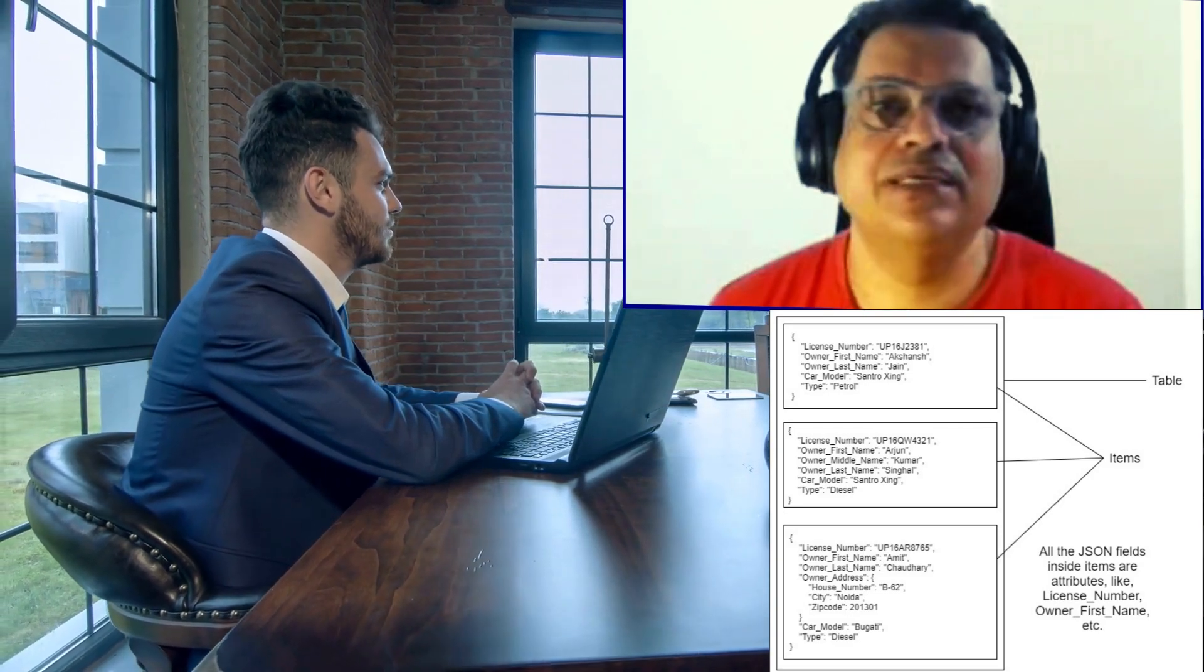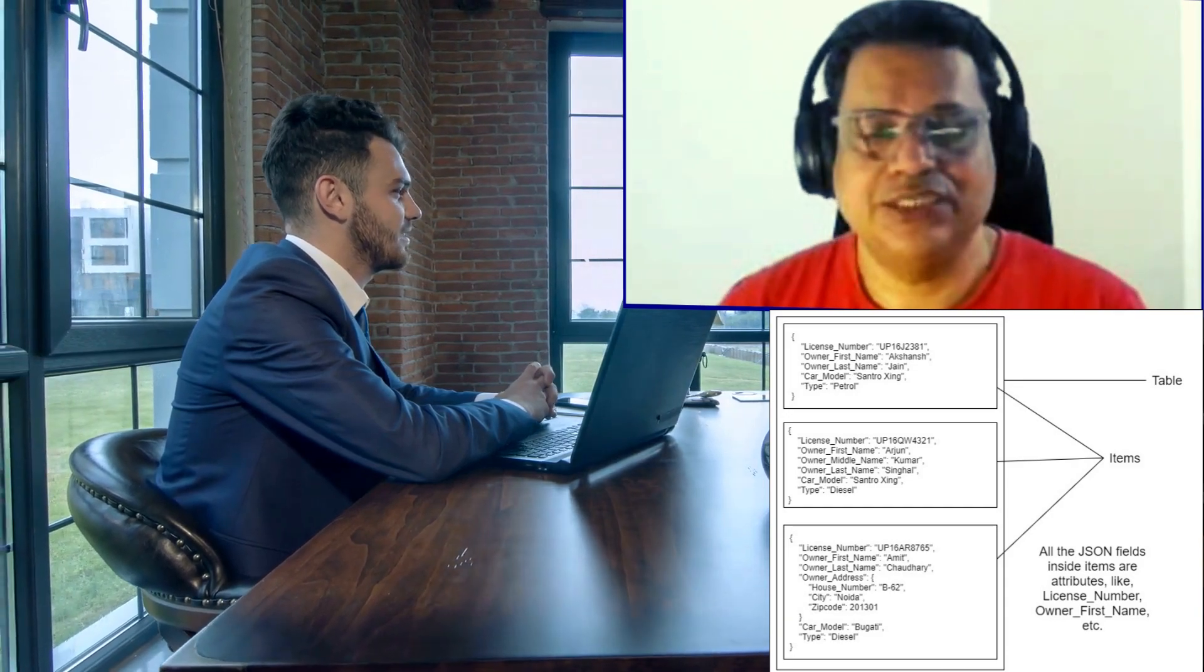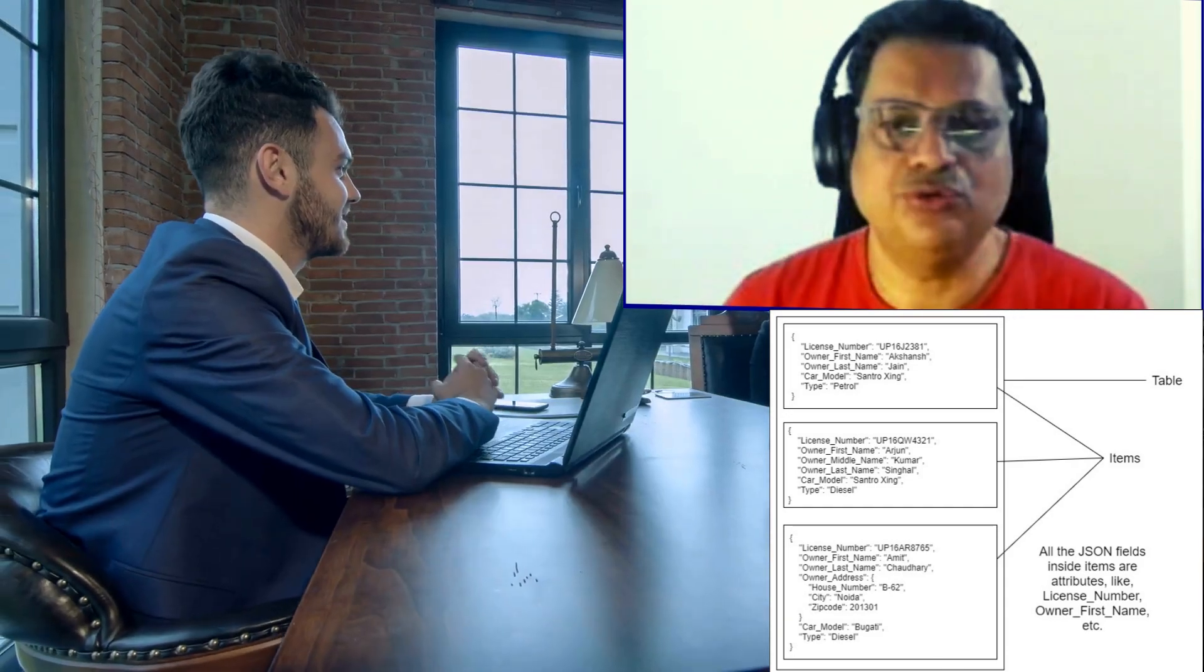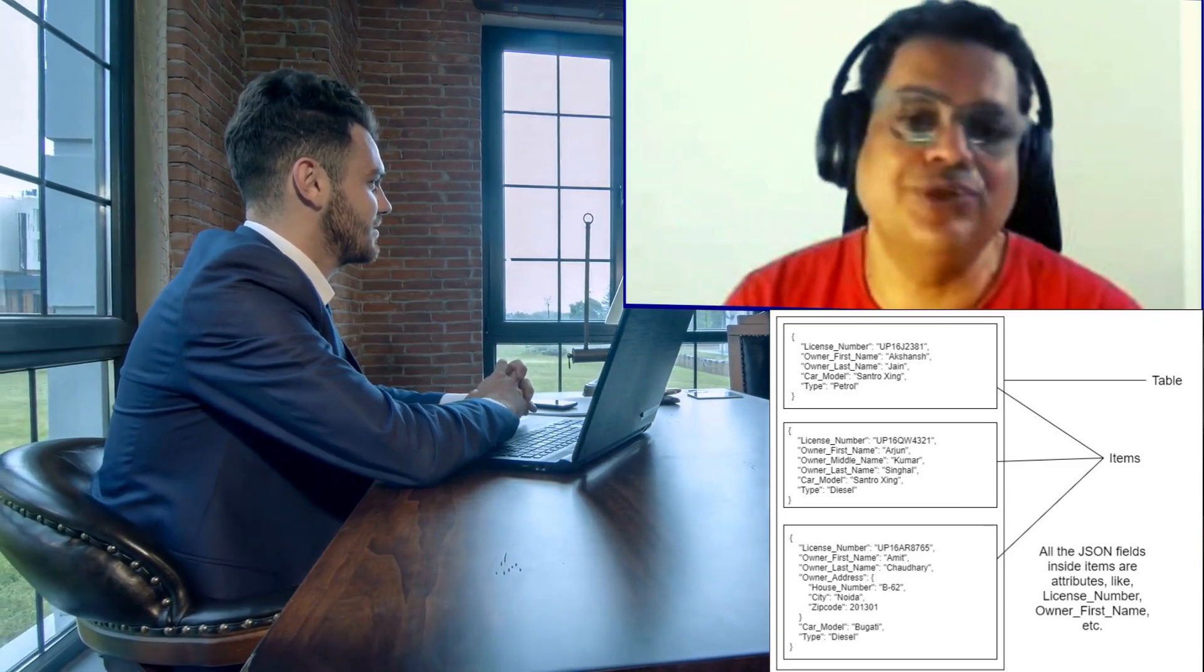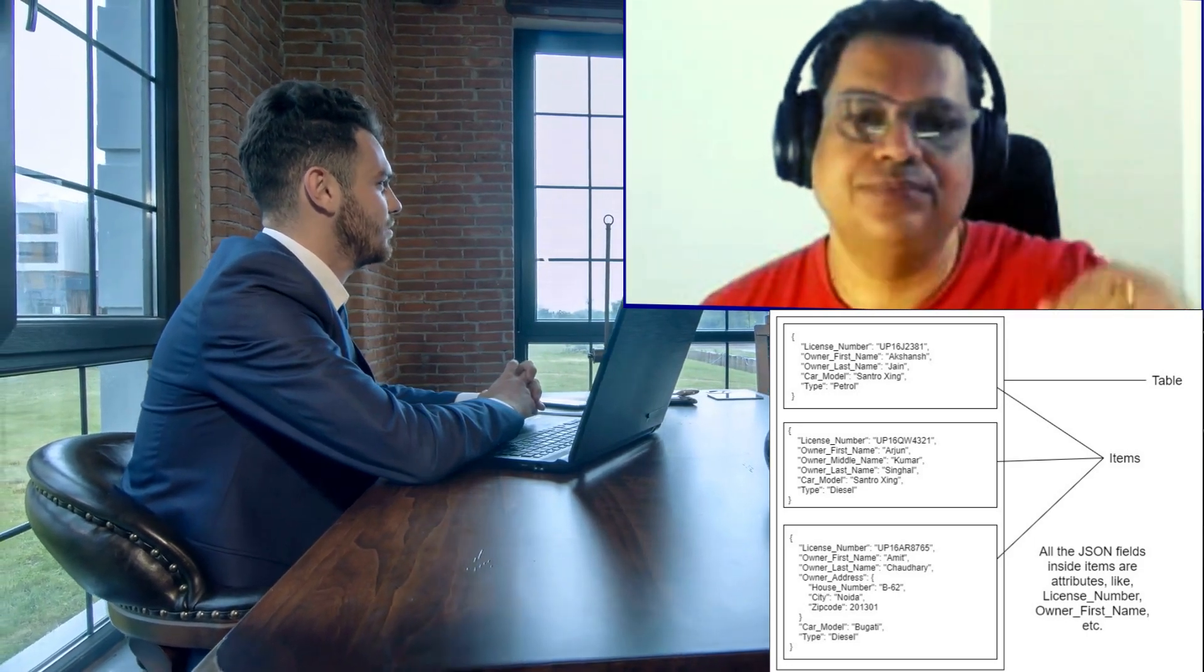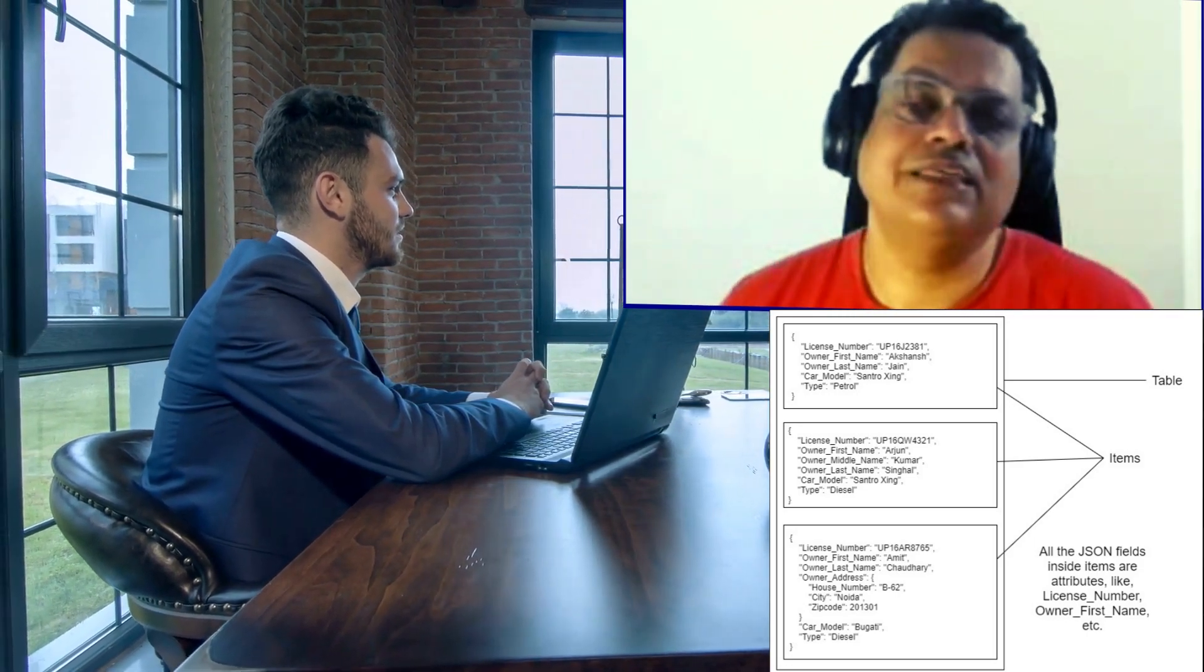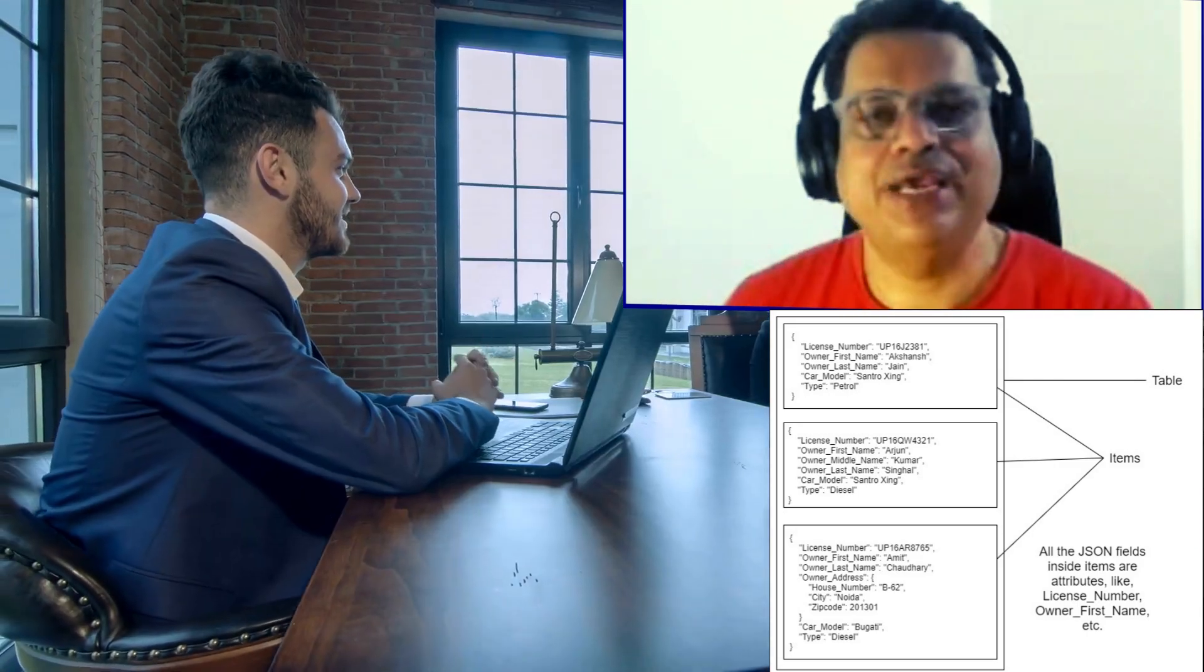Instead, you only specify the primary key. In SQL database we have a row. Here we can consider the equivalent to row as called item. An item in DynamoDB is equivalent to a row in SQL. It represents a single row of data. Each item is defined by a unique primary key.